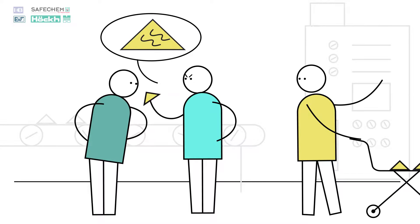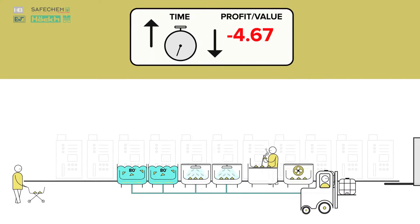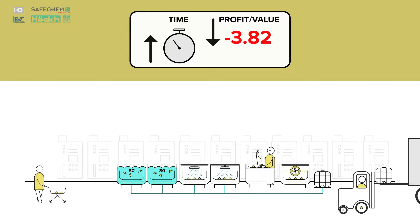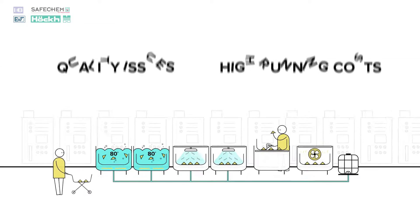Which means the operator and the manager are not satisfied, so the cleaning fluid is continuously changed and more manual processes are added to improve the result. But in the end, it is still a manual process with quality issues and high running costs.